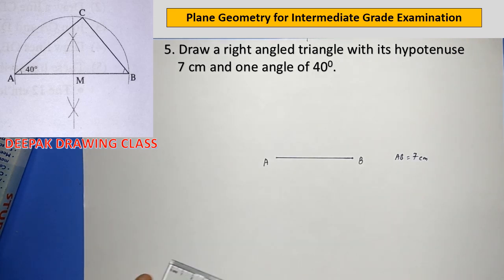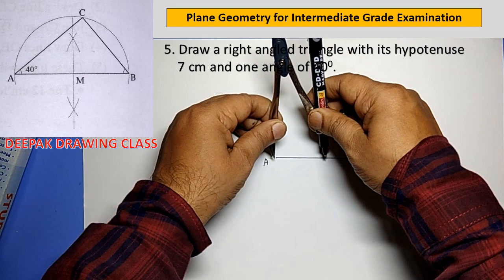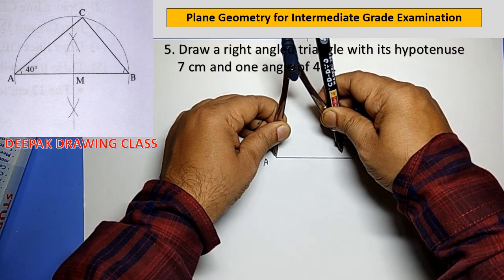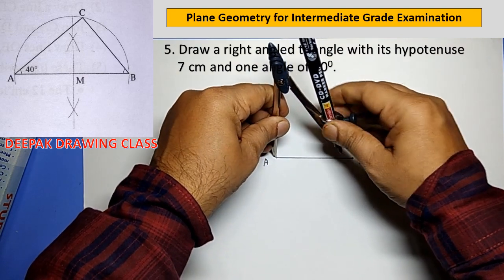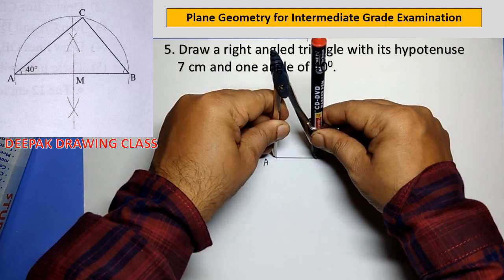So first of all, draw a line AB of 7cm length, then bisect line AB at point M.